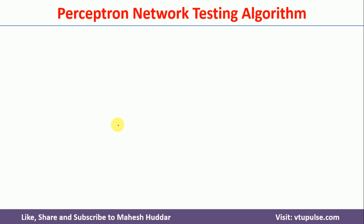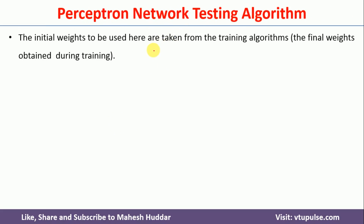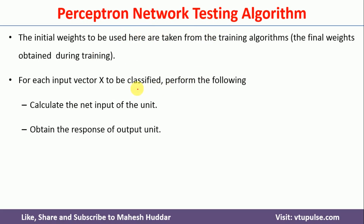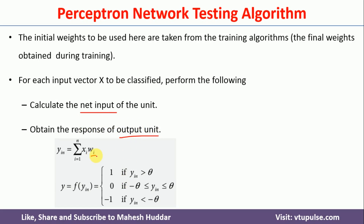Coming to the testing algorithm of the perceptron training rule: after training the model, we obtain the final weights, which correctly classify the training examples. These final weights are used to calculate the net input y_in for new examples. Once y_in is calculated, the activation function gives the output. This output tells us the predicted class for the new example.